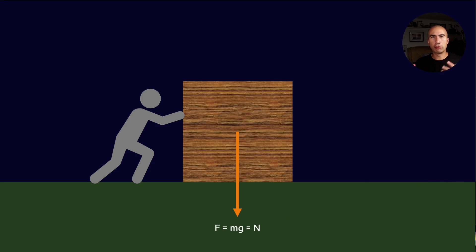So if I have just a simple system where I have a block on the ground and I'm trying to move the block, let's think about all the forces that go into moving it. Firstly, there's the actual force of gravity. This is the weight of the block, which is mass times gravity.